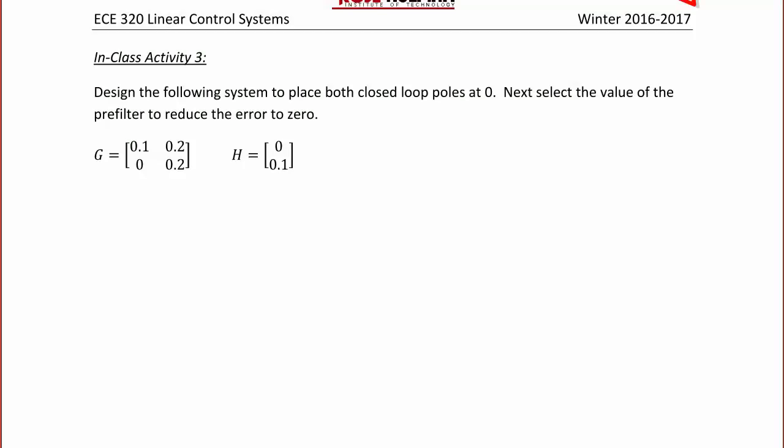In class activity three, design the following system to place the closed-loop poles at zero. This is our example of a deadbeat system that we discussed before. Select the value of the pre-filter to reduce the error to zero. G is equal to 0.1, 0.2, 0, 0.2, and H is equal to 0, 0.1.